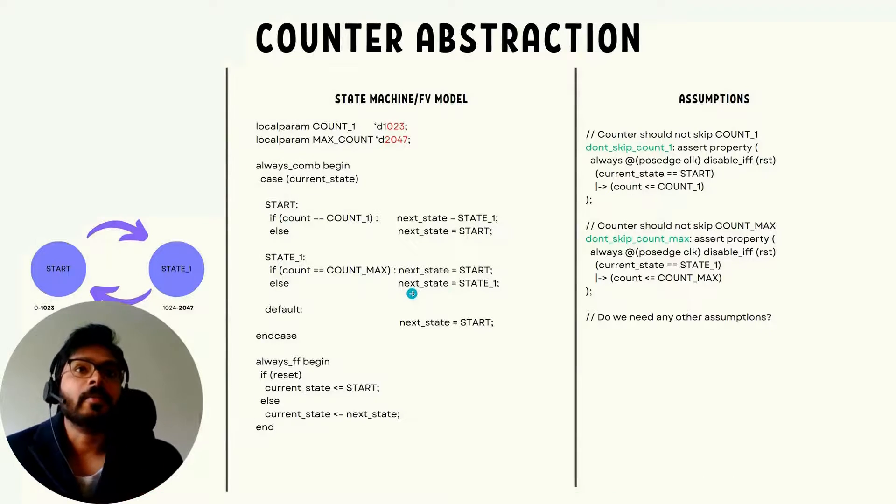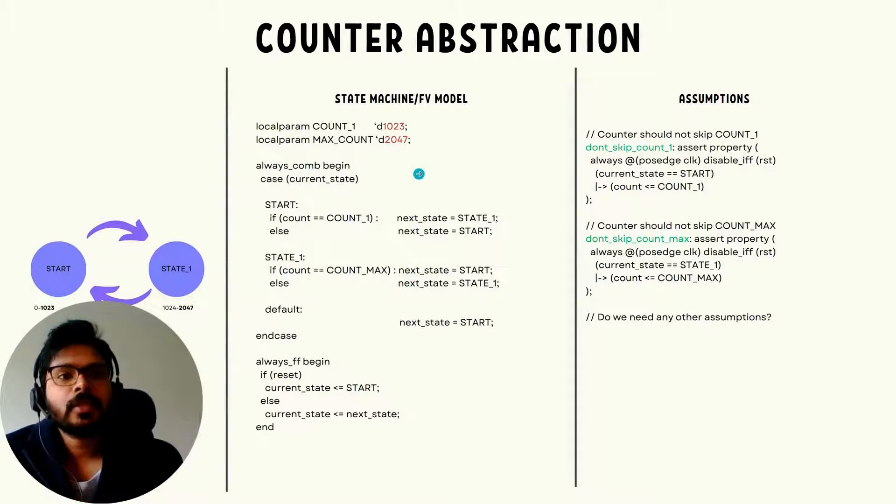Let me tell you how you can implement counter abstraction. To do this, we need to create a finite state machine with two states. Here I have state start and state one, but really the number of states depends on the number of values that you want the abstracted counter to take. Here I'm ensuring that the abstraction takes the values of count_one and max_count, which are 1023 and 2047 respectively. Out of reset, the state will go to start. And then once it is in the start state, we have an assumption saying that don't skip counter_one.